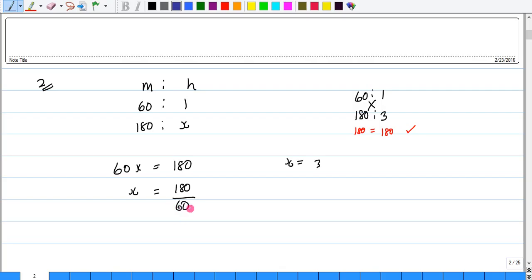Three sets of 60 makes 180. Okay, and if we were to plug in the 3 and find the cross products, fill it in here.